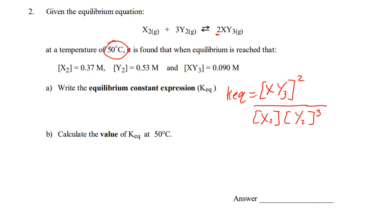X2 times Y2, and the Y2 is cubed. Calculate the value for this. Well, X2Y is 0.090, and that's squared.